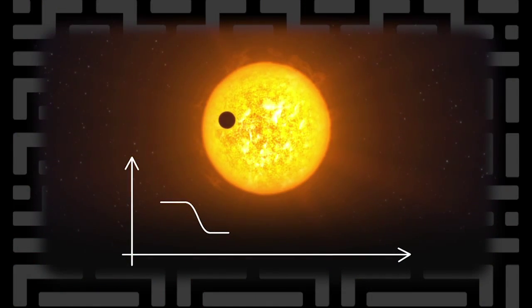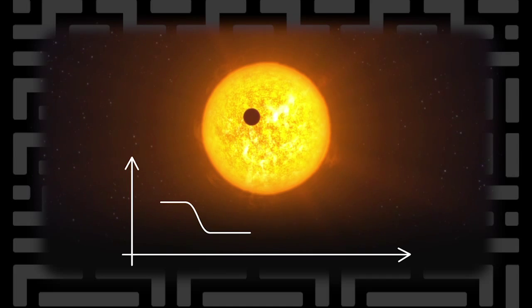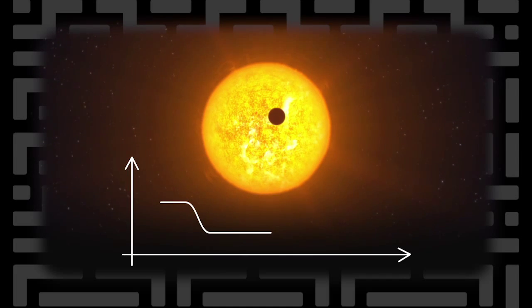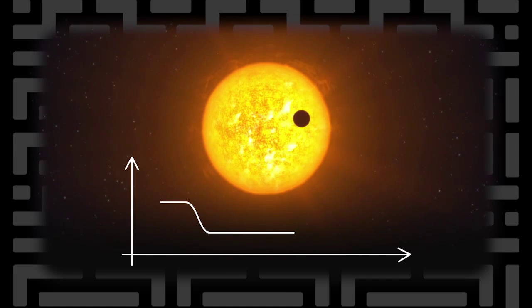Another method is the transit method. The planet gets in front of the star and blocks some of the starlight — we see the star get a little bit fainter. Again, we have to look at the star. So all of the planets that you hear about are within a few hundred light years of the Earth. Most of the planets discovered are going around stars that are intrinsically bright.